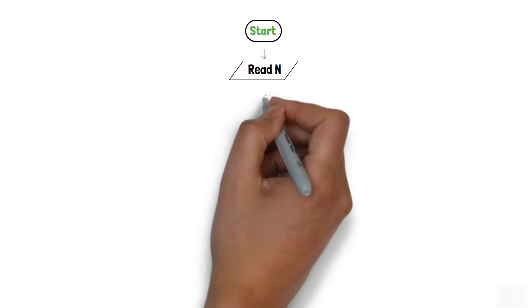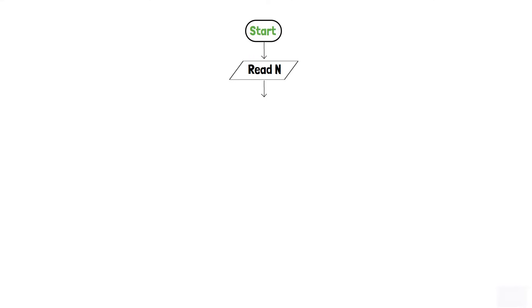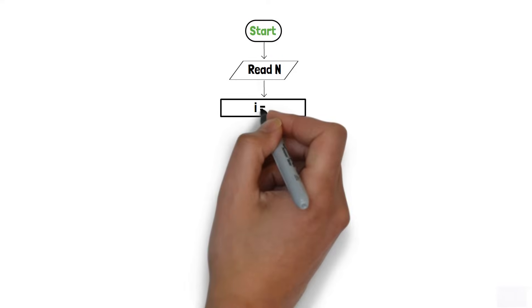Furthermore, we must create a new variable and initialize it with 1. As initialization is done in the process box, thus we have to implement the process box too. Let i equals 1.